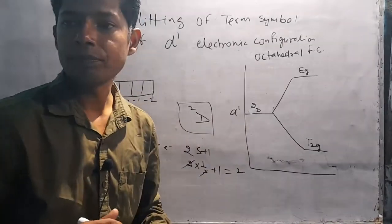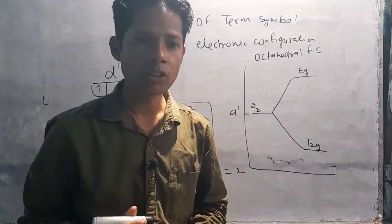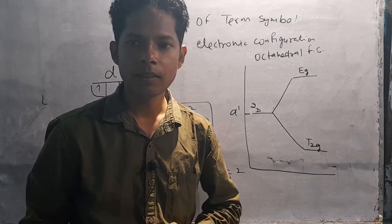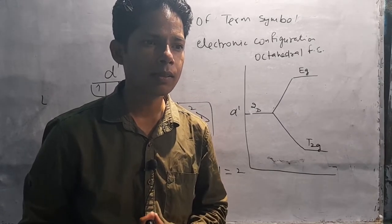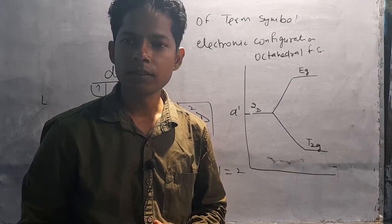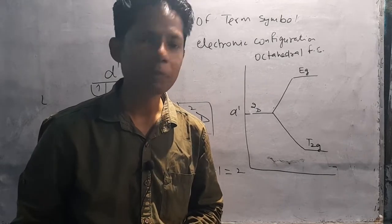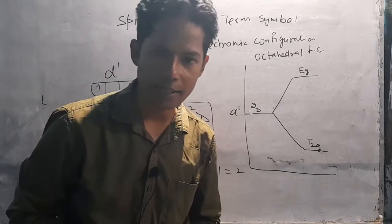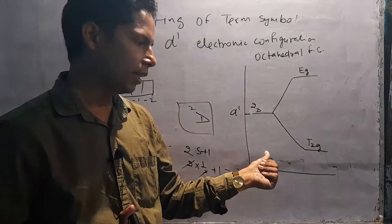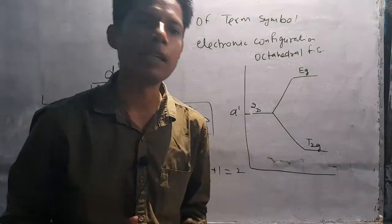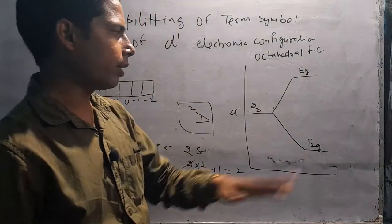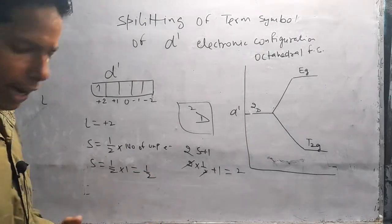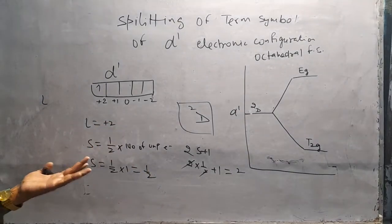Tetrahedral में g हट जाता है क्योंकि g का मतलब gerade होता है, जिसका अर्थ है same symmetry। Octahedral में symmetry same होती है इसलिए g आता है, लेकिन tetrahedral में g वाला word हट जाता है। Tetrahedral में सिर्फ e और t2 लिखते हैं।